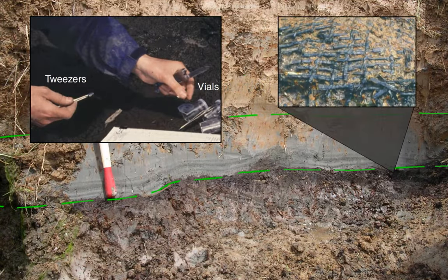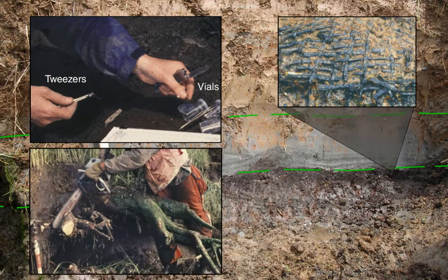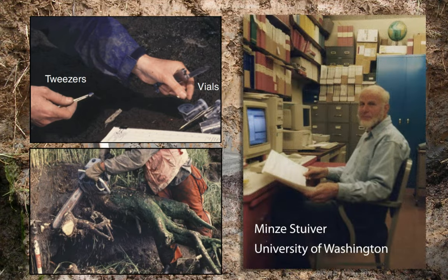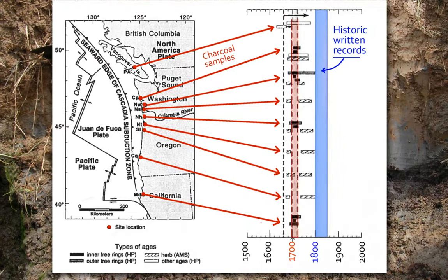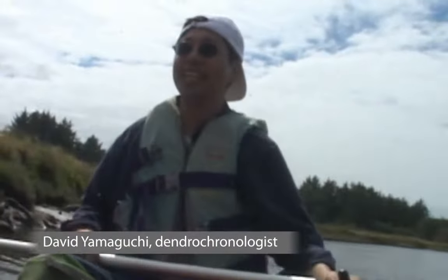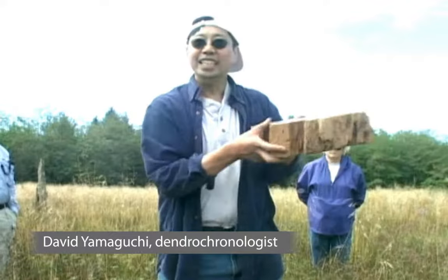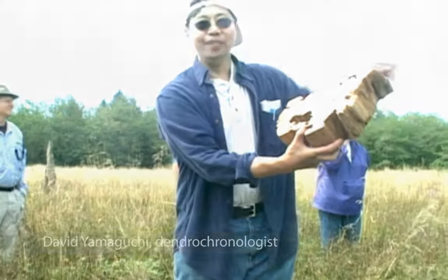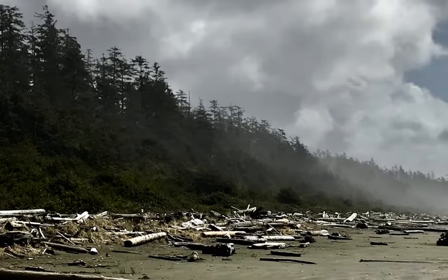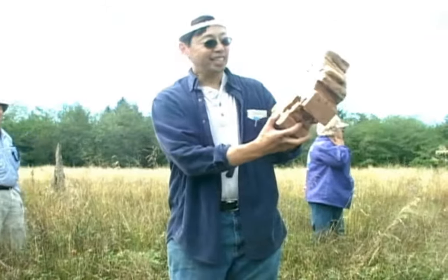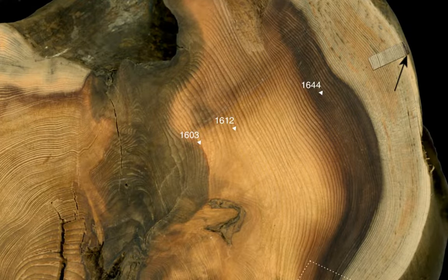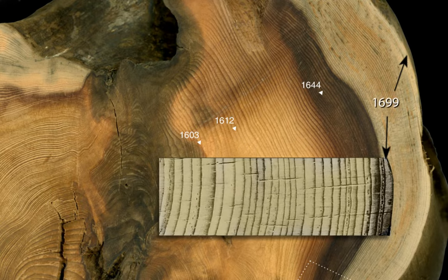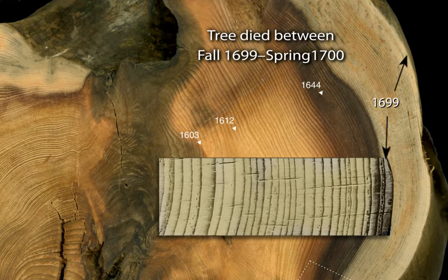Using carbon-14 dating of charcoal, marsh grass, and tree wood, University of Washington researcher Minze Stiver narrowed the date of the ghost forest formation and the great earthquake to between 1695 and 1710. David Yamaguchi, a dendrochronologist or tree ring analyst, compared the rings of the victim trees in the ghost forest to the witness trees on higher ground nearby that experienced but survived the earthquake. By dating the final ring from the bark-covered roots, Yamaguchi determined that the last tree ring recorded the 1699 growing season, so the trees died between the fall of 1699 and the spring of 1700.